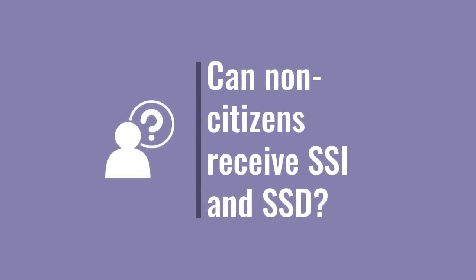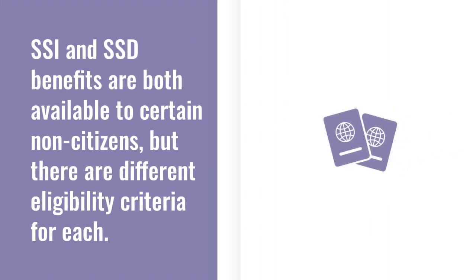That was a quick overview of the five-step sequential evaluation process that the Social Security Administration uses to determine whether you are eligible to receive SSI and/or SSD benefits. Our office can assist you in figuring out whether you likely qualify for benefits under this evaluation process, and can also assist you if SSA says you do not qualify. Lastly, it is important to note that SSI and SSD benefits are both available to non-citizens, but there are different eligibility criteria for each program.